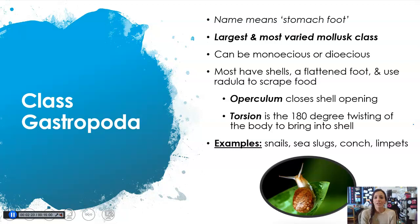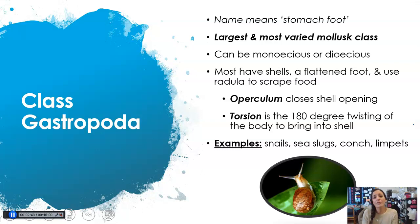So first up, class Gastropoda. This word means stomach-foot — gastro: stomach, poda: foot. You're going to see poda a lot, so make sure you know that it's associated with foot. It is the largest and most varied Mollusca class. Members of this class can be monoecious or dioecious, meaning they're hermaphrodites with both sex organs, or they are separate males and females that have to mate to produce offspring. Most members of this class have shells and have that flattened foot to help them move, as well as a radula to help them scrape their food.